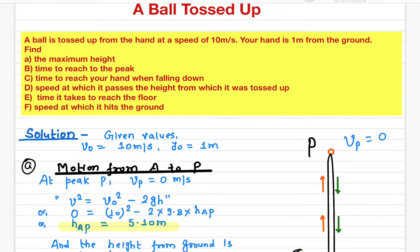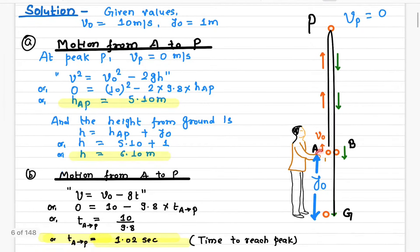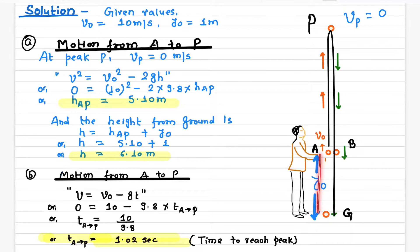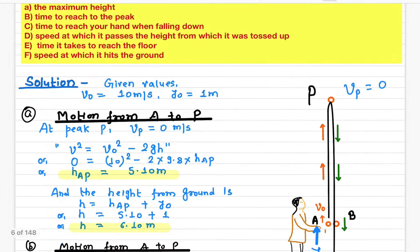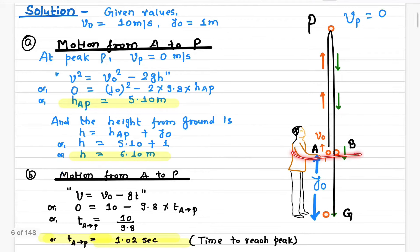In this video I will talk about the motion of a ball when it is tossed up. We have a ball here and the ball is tossed upwards. The height from the ground — G stands for ground level — and the height of the ball is one meter. It is thrown upwards from one meter height. When thrown upwards with a velocity of 10 meters per second, the velocity starts decreasing in magnitude.